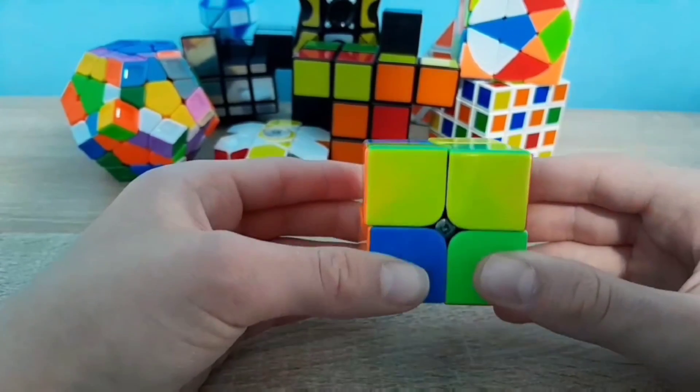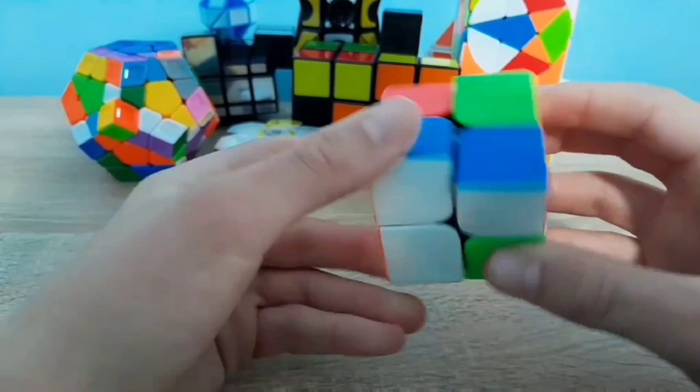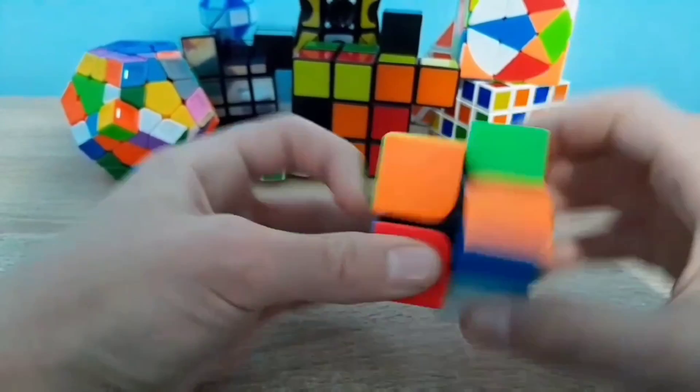The next cube is 2x2. The first step is to solve the first row and one color.